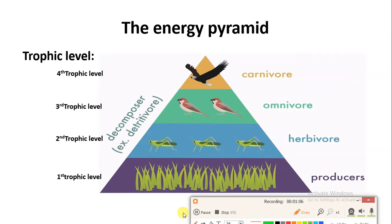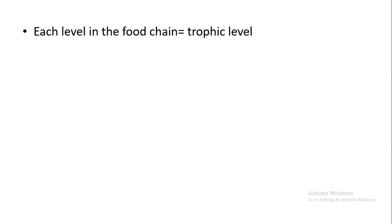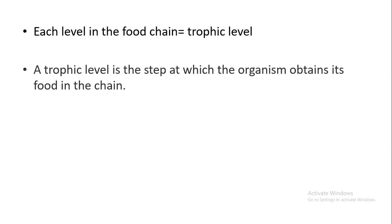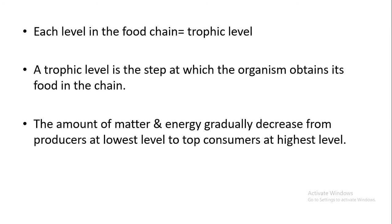Whatever you look at, energy is always going to flow in one direction. First of all, the sun's energy is converted into food form by the help of photosynthesis. And now the energy is going to get transferred from one trophic level to the next trophic level. Every level in the food chain is a particular trophic level, and every trophic level is a step where the organism obtains food in the chain.